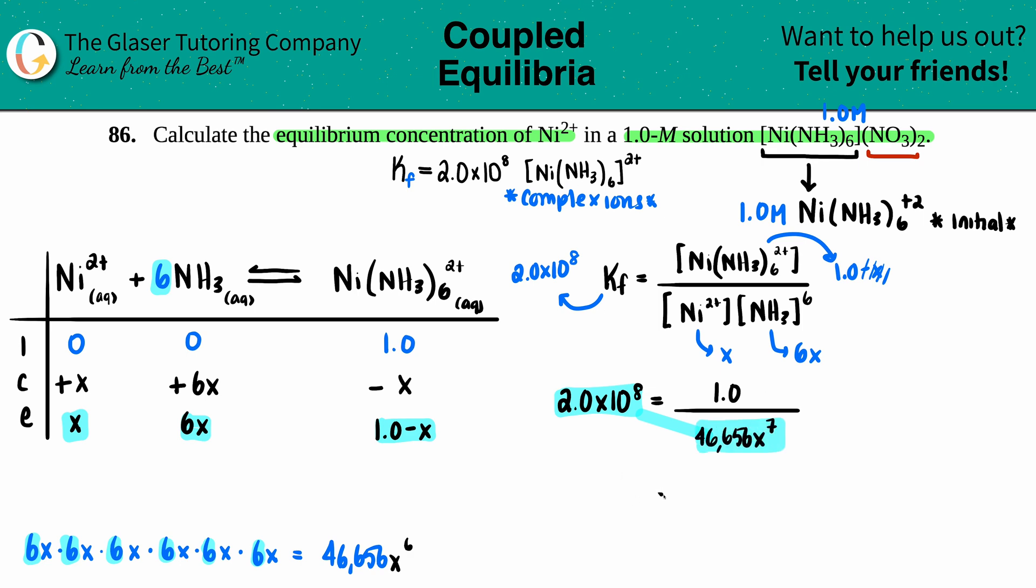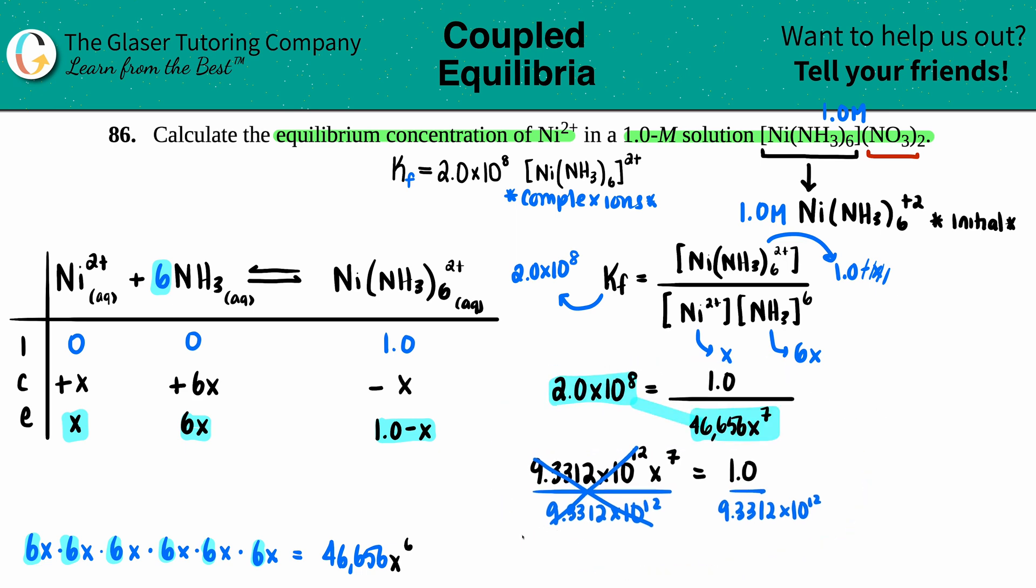So this times this number, and then it would be equal to 1.0. Let's see: this times—2.0×10^8—I get 9.3312×10^12, and I just need a little bit more room because this would be now x^7. So let's solve for x. We have to divide by 9.3312×10^12 on both sides. This will cancel, and now we have x^7 equals—oh boy—1 divided by that number, I get a long decimal: 1.071674×10^-13.